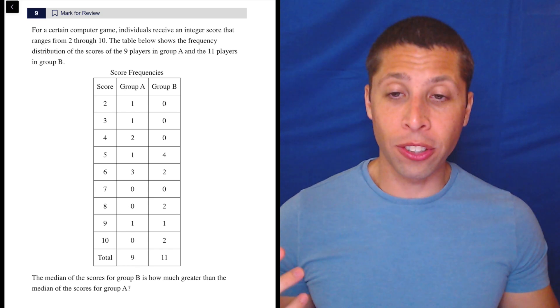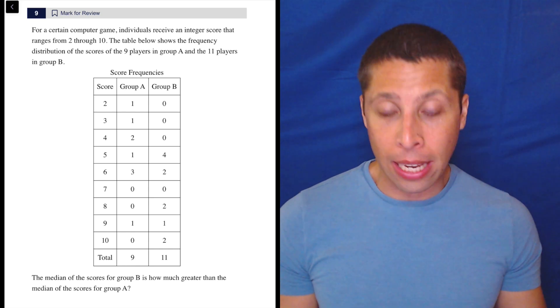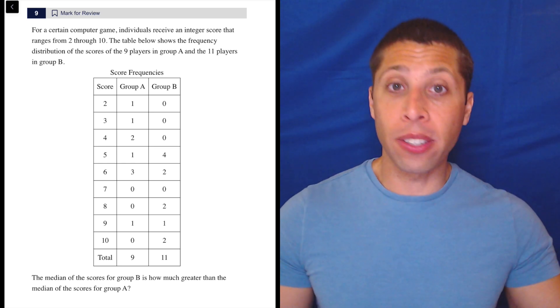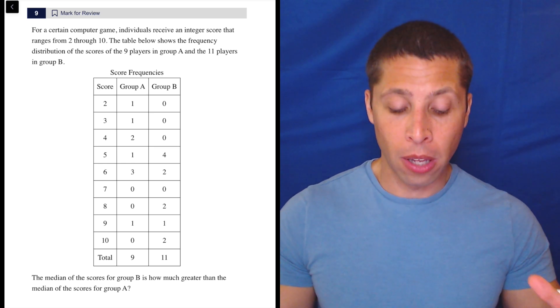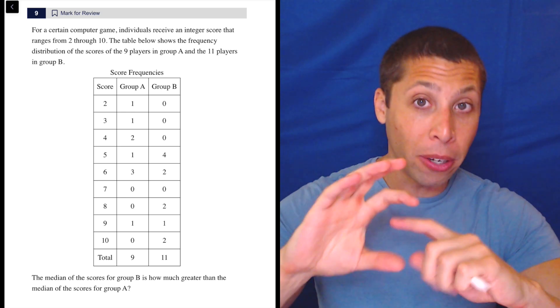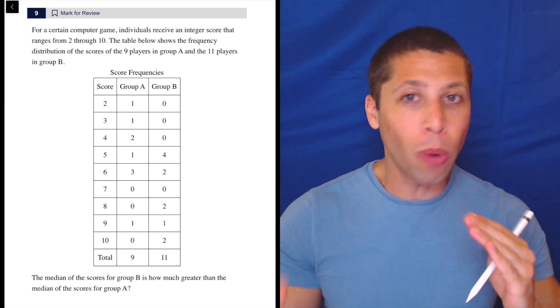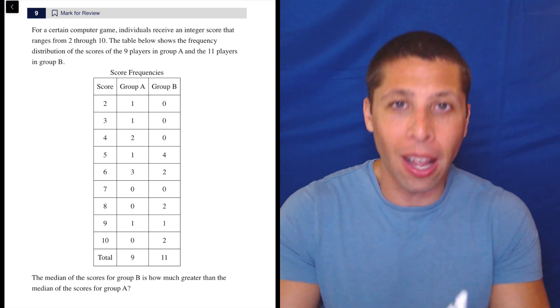This question is a good way to learn how to use a frequency chart to find a median. We don't want to list all these numbers out. We also don't want to just look at it and think about what's the middle row, because that's not how this works. The frequencies are not evenly distributed, so the middle row won't necessarily be the middle of the set.